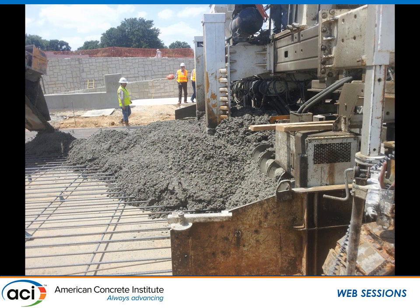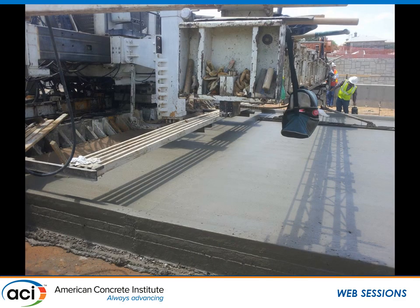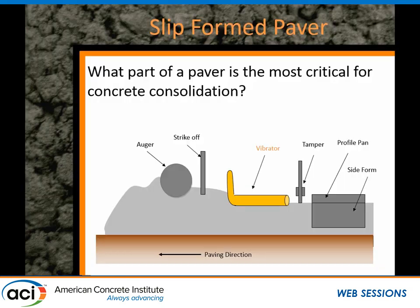We have concrete that goes in looking one way in front, and in back it looks like a finished pavement. On a pavement, workability is important, but you have a window of workability. You need your concrete to be workable enough that when you hit it with a vibrator you can consolidate it — but not too workable, because if it's too workable, you'll actually have edge slumping.